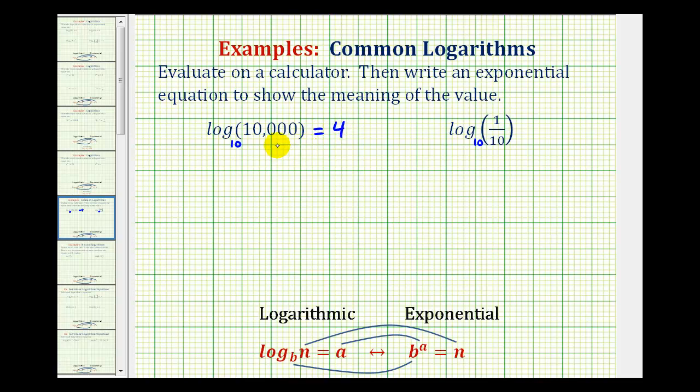The second part is, we want to write an exponential equation to explain why this is equal to four. Well, the reason it's equal to four is because our base 10 raised to the fourth power is equal to 10,000. So this emphasizes that when we evaluate a logarithm, we're actually finding an exponent. And in this case, it's telling us that 10 to the fourth is equal to 10,000.